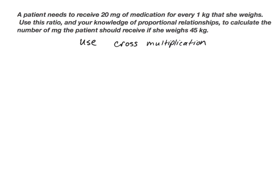In this video, I will be using cross multiplication to solve how many milligrams of medication a patient should receive. From the previous module page, I know the patient needs to receive 20 milligrams of medication for every one kilogram. That is the ratio of milligrams to kilograms that must be consistent across all other equivalent ratios — that is the relationship between milligrams and kilograms for this patient.